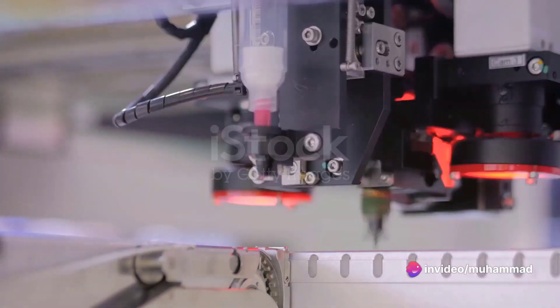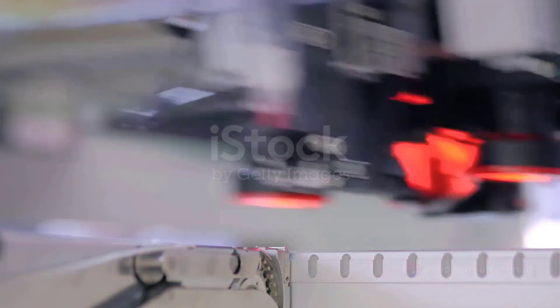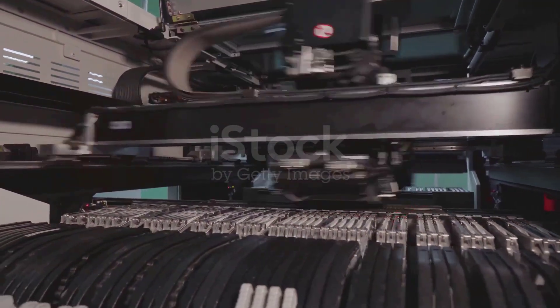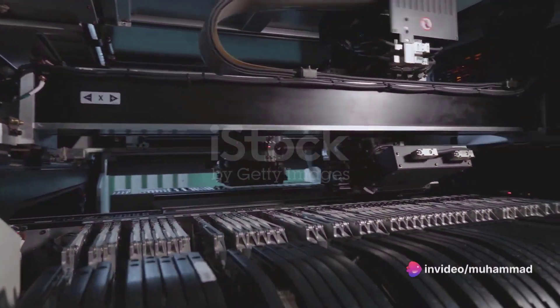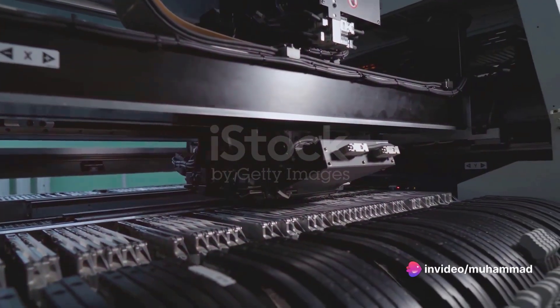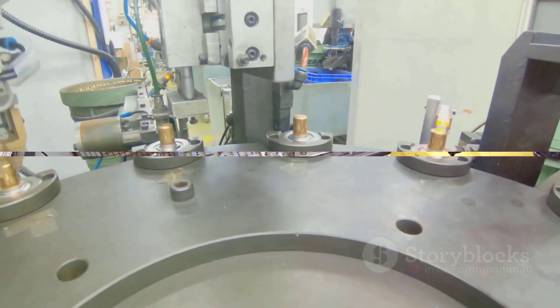CIM is a method of manufacturing where the entire production process is controlled by computer. It's not just about automating the machines, it's about integrating the whole system, from design and production to distribution, in a smooth, computer-controlled flow. It's a holistic approach that ties together all aspects of the manufacturing process.